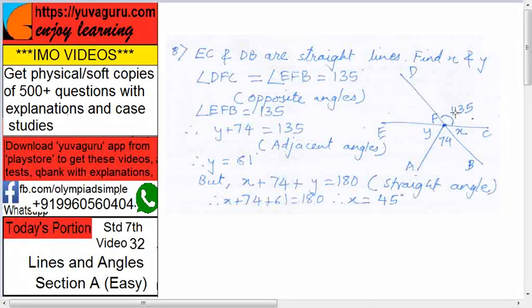So DFC and EFB are vertically opposite angles. So they are equal. So both are 135 degrees. So EFB becomes...